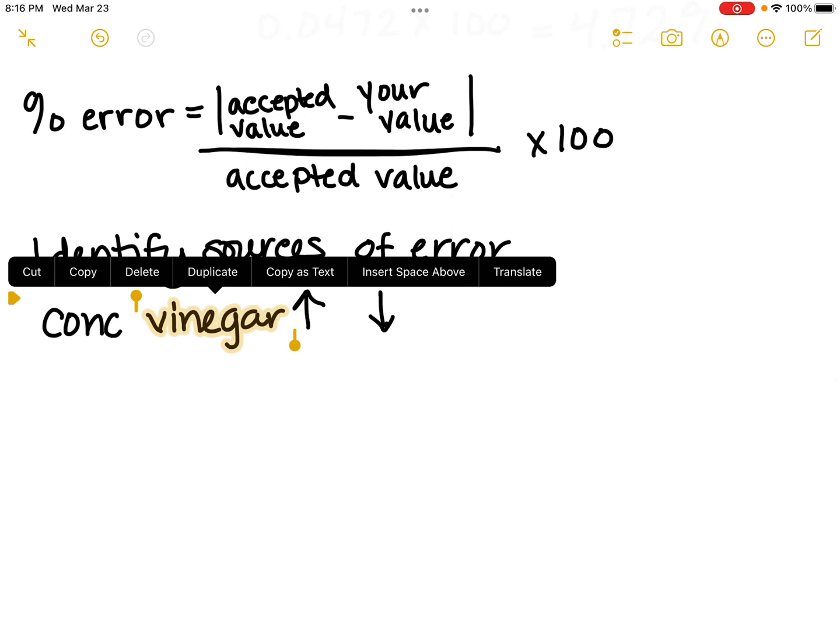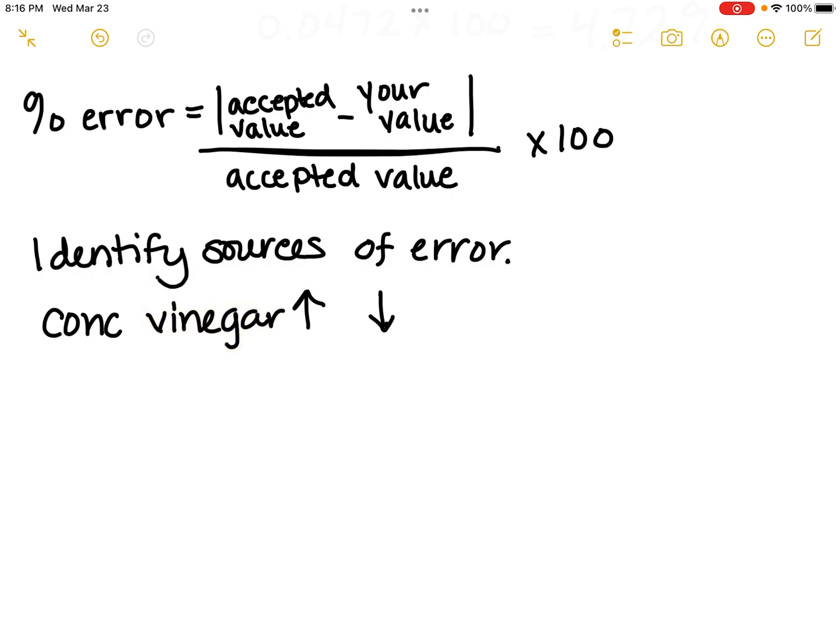If your number is below the accepted percentage, tell me what you could have done wrong that made you think the acid was less strong. If you got a higher number, what would lead you to believe it was stronger?